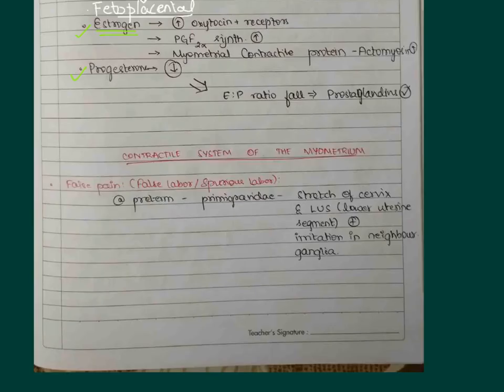Let's speak about the contractile system of the myometrium. False pains are also called false labor or spurious labor. This will be taking place at a pre-term period - for example, it might be taking place just one to two weeks before the term in case of primigravida, and it can be a few days before itself in case of multiparous women. There is stretching of the cervix and lower uterine segment and irritation in the neighboring ganglia. The mother feels that she is undergoing labor, but actually it's simply the effacement of cervix that takes place due to engagement of the head, and it is not truly labor.